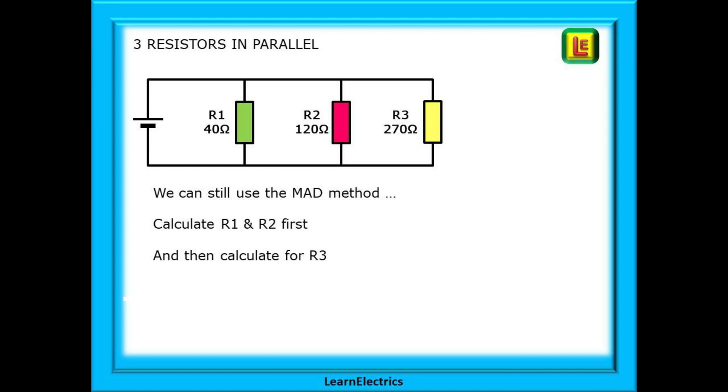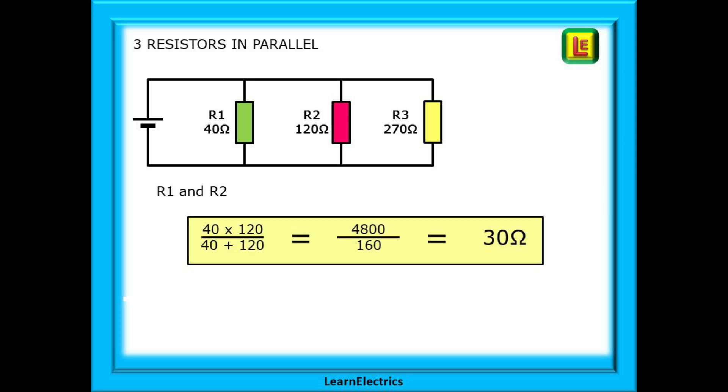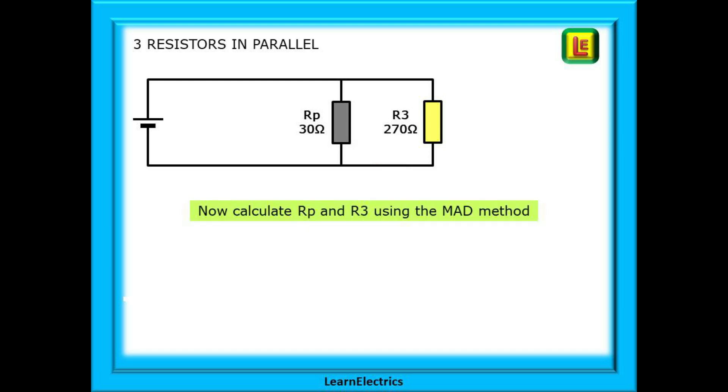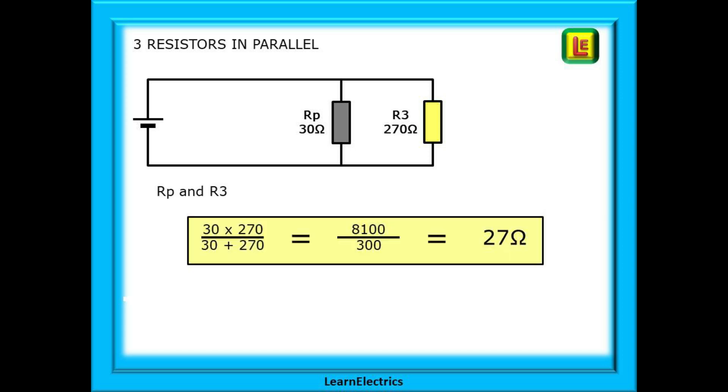But what about three resistors? We can still use the MAD method. Calculate R1 and R2 first, and then calculate for R3. In this example, calculating the new values for R1 and R2 first, we have 40 ohms and 120 ohms in parallel, and this gives 30 ohms for RP. Now we can use the new resistance RP, so we have 30 ohms in parallel with the 270 ohm resistor. We can now do another MAD calculation as we now have just two resistances again.